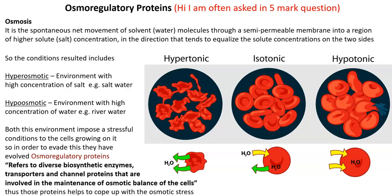In a hypertonic environment, water comes out to balance the osmotic potential, causing the cells to shrink. In a hypotonic environment, water moves inside, resulting in the bulging of the cells. This experiment can be conducted using red blood corpuscles, that is RBC cells.